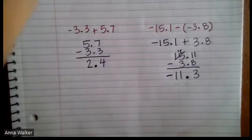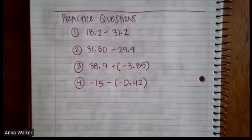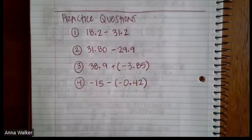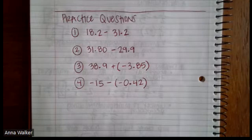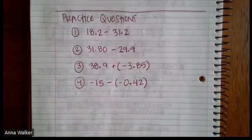If this is the second time that you are watching the video, please go ahead and set up the following practice problems. Go ahead and pause and set them up. All right. And if you have trouble reading, it is 18.2 minus 31.2, 31.80 minus 29.9, 38.9 plus -3.85, and -15 minus -0.42. If you have any questions, make sure you write them down and I will see you guys in the next one. Bye.